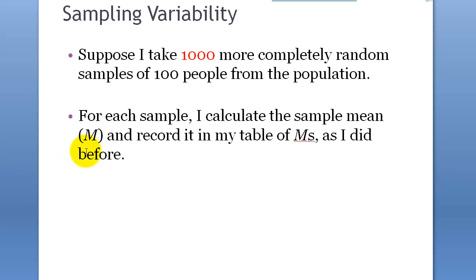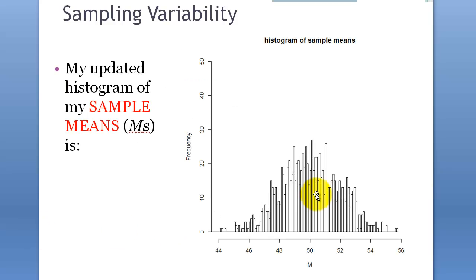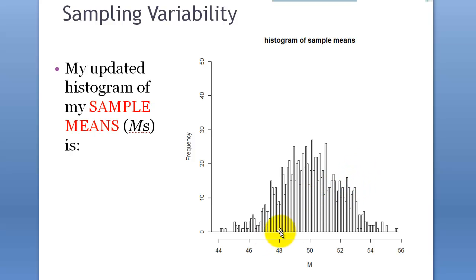Suppose we take 1,000 more complete random samples of 100 people. We repeated about 10 times before, but what if we repeated 1,000 times and turned it into a histogram? Most of the time the mean is around 50. Sometimes there are outliers and the mean could be 48, 46, or even 44 sometimes, or 56 sometimes. But the majority of the time the mean is going to be around 50, between 48 and 52. And you can tell the standard deviation is about 2.